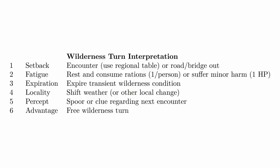Let's look at some ways that the Hazard System can be adapted to other situations — for example, wilderness travel. In wilderness travel in the Hazard System, each turn is a whole day. In Knave's 2nd Edition, it's actually one sixth of a day because they divide each day into six watches. But whatever the length of your turn, you just roll a D6. Number one, the setback is an encounter just as it is in the dungeon turn. Number two, fatigue is rest and consume rations, one per person, or suffer minor harm.